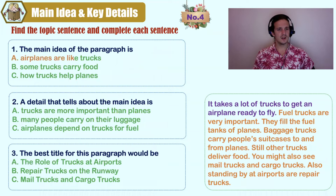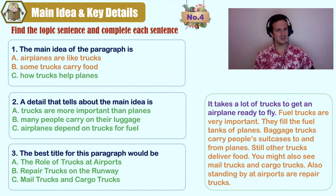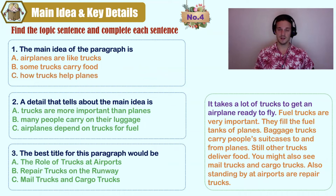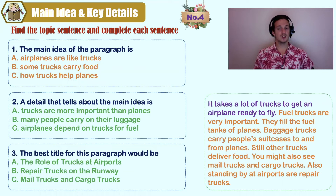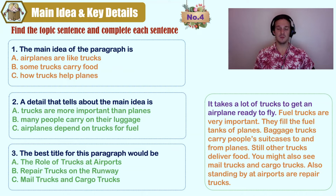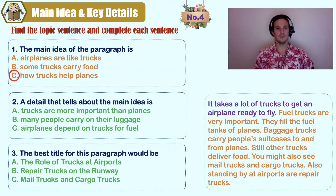The main idea options: A) airplanes are like trucks, B) some trucks carry food, C) how trucks help planes. Look at the topic sentence: 'It takes a lot of trucks to get an airplane ready to fly.' I see two nouns — trucks and airplanes — and a verb showing how they're related: to get an airplane ready to fly. That answers C, how trucks help planes.